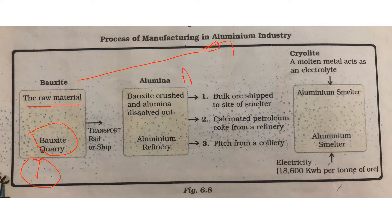Bauxite is crushed and we get alumina. Alumina is nothing but aluminum oxide, Al₂O₃. You will learn in more detail in higher grades — bauxite is mixed with caustic soda, which helps to dissolve the alumina out. As of now, you should know that it is crushed and we get alumina dissolved out, and this is happening inside the refinery.